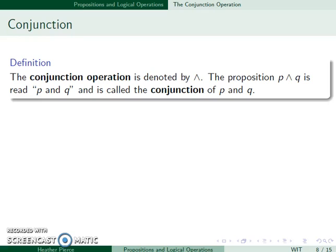So our first logical operation is the conjunction operation. This is denoted by this wedge, and the proposition P wedge Q, which is read P and Q, is called the conjunction.